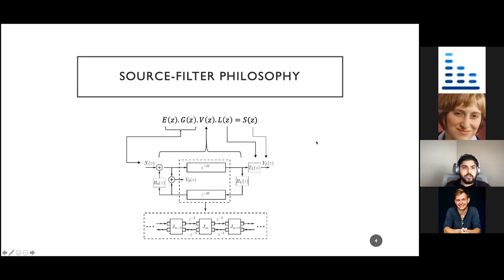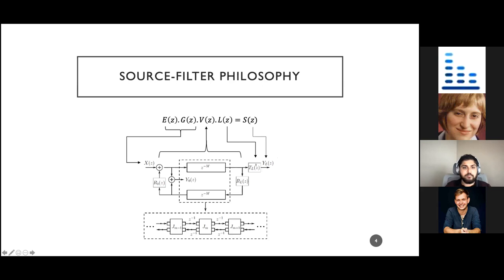Under the source-filter philosophy, we assume no coupling between each of the individual components. When we assume no coupling, we can divide the speech signal as a combination of an excitation signal filtered with a glottal flow filter, multiplied with a vocal tract filter, and then multiplied with a lip radiation filter, giving us the voice output.